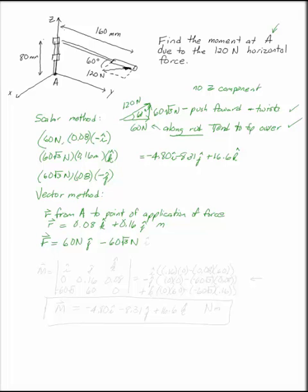My f force, I've already broken up into components up there, is 60 newtons in the j minus 60 on the square root of 3n in the i direction. When you find the moment by a cross product, you've got i, j, and k on top.